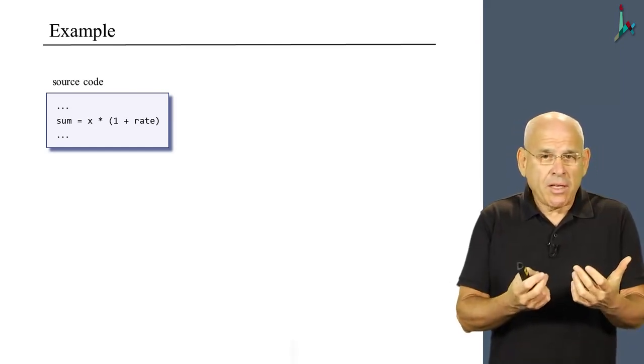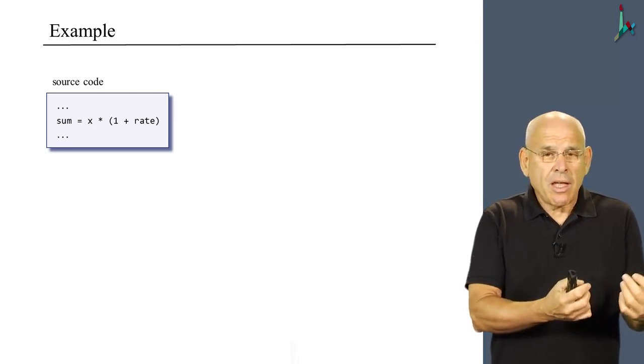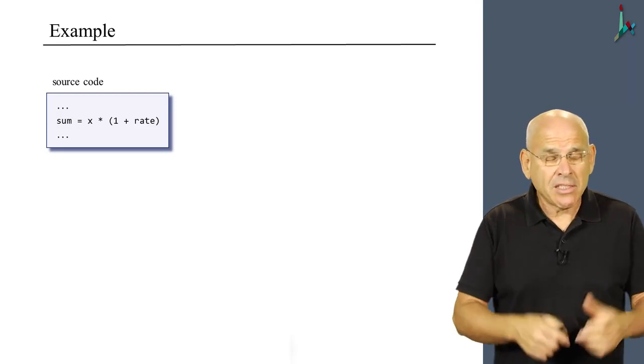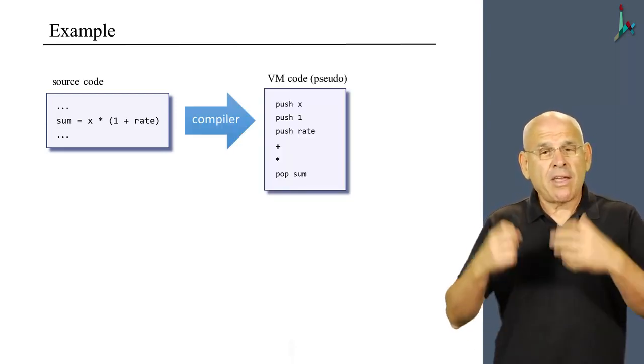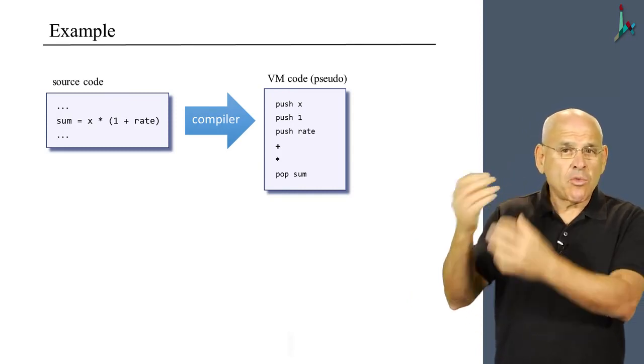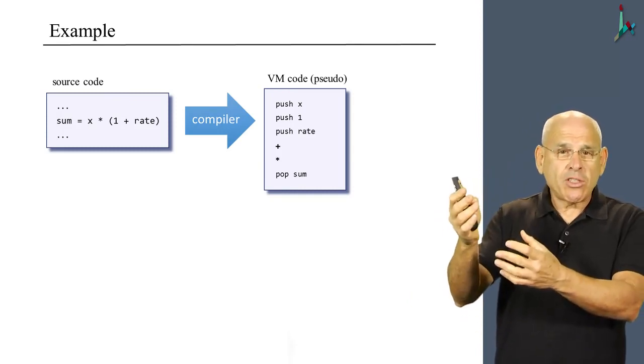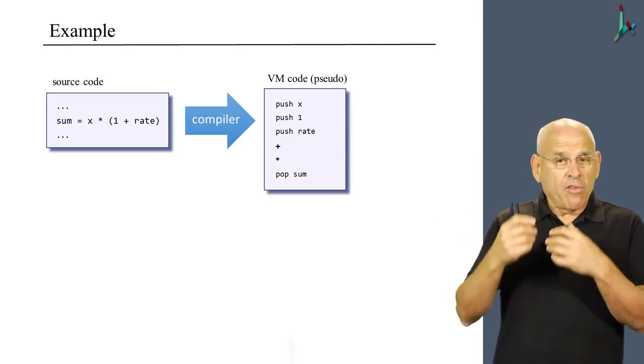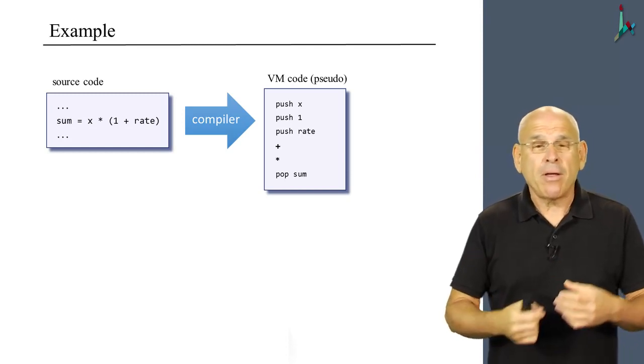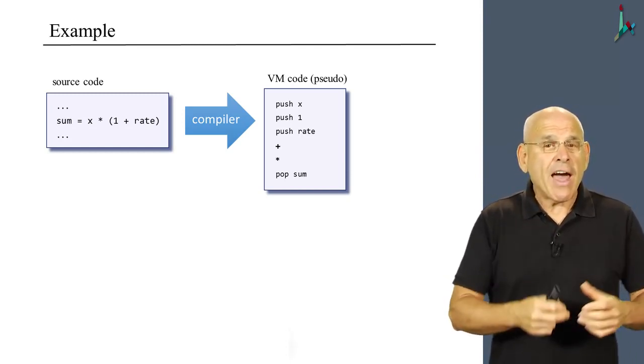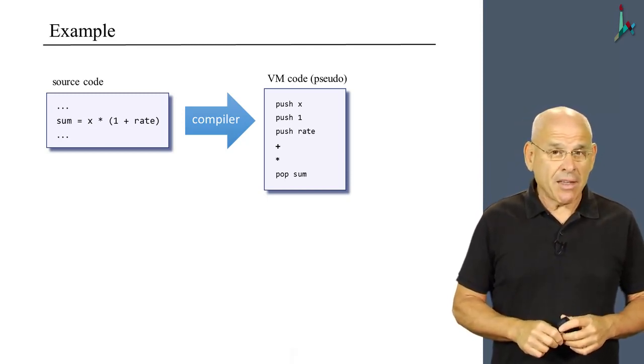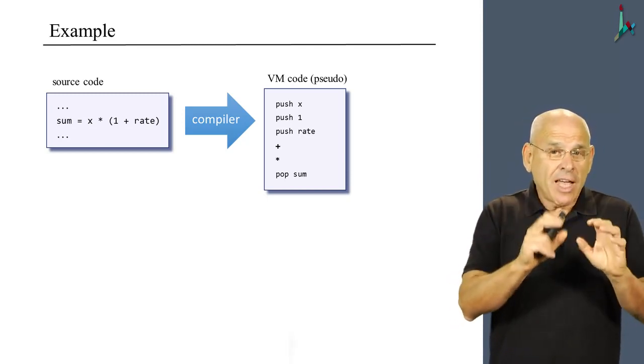Now, the code generator is going to take this expression and somehow by some magic, which we haven't yet discussed, it is going to translate it into VM code. And the result will be the stream of VM instructions that you see here. And you can convince yourself, you can go through these instructions and you can convince yourself that they will end up computing the value of the desired expression and putting this value at the top of the stack.